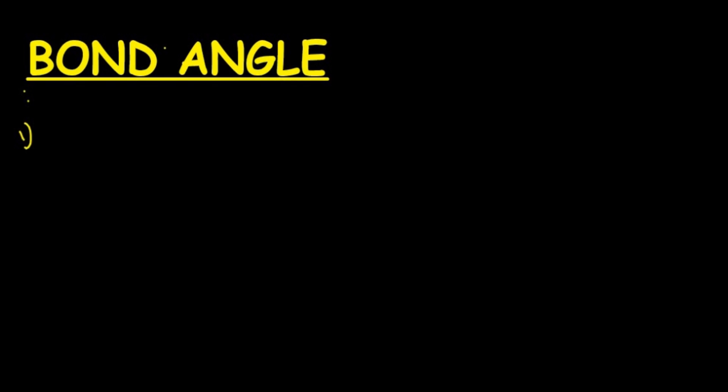The first thing is bond angle. Before bond angle, I will suggest you to watch how to find out the hybridization — my video is there. So please go through it. The hybridization is important before bond angle. We all are familiar that SP hybridization gives a bond angle of 180 degrees.